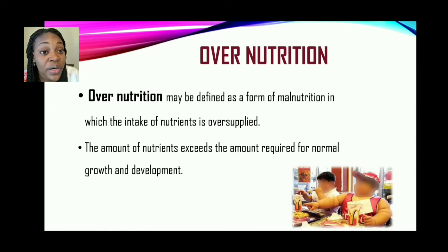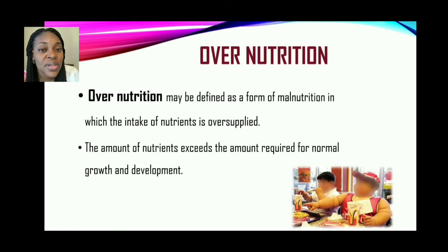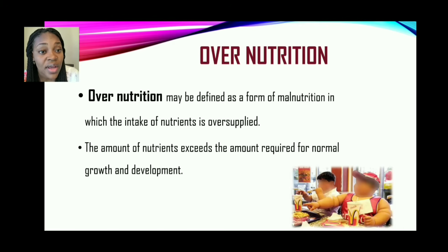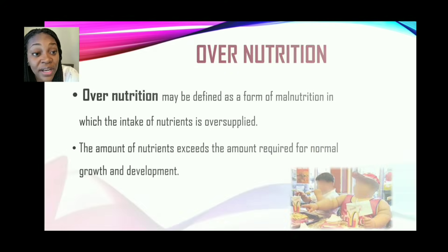There is also overnutrition. Overnutrition may be defined as a form of malnutrition in which the intake of nutrients is in oversupply — persons are eating too much, consuming too much food, getting more nutrients than the body actually needs. The amount of nutrients then exceeds the amount required for normal growth and development.